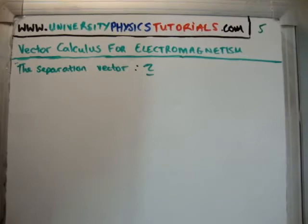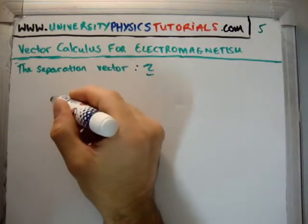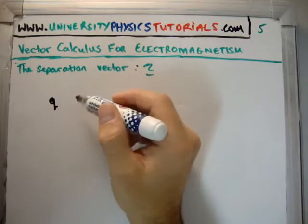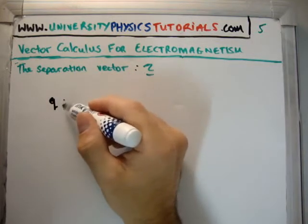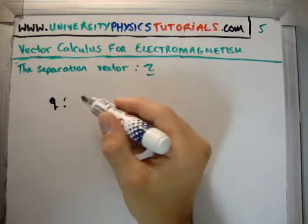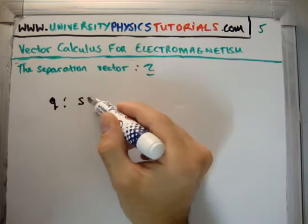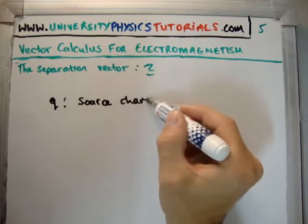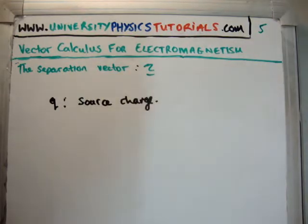So in electrodynamics or electromagnetism, you may or may not know at this stage that we usually talk about charges. Well of course you know that, but we talk about source and test charges. So I'm going to call, for all my videos, I'm going to give small q as a source, a source charge. That is my definition of a source charge, a small q, that is my notation.